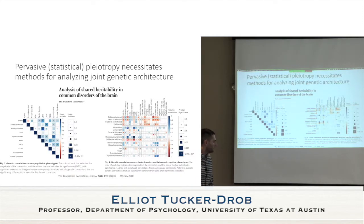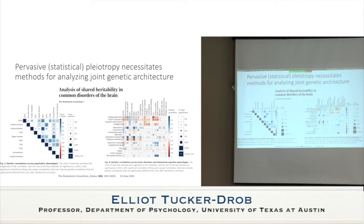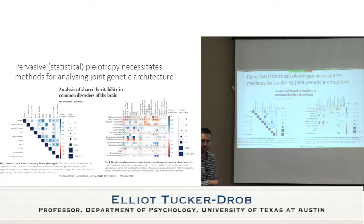We typically convert covariance matrices into genetic correlation matrices, which you've all done for your problem set. When we do that for lots of traits, we end up with what are sometimes called atlases — heat maps of genetic correlations. Here's a paper from the Brainstorm Consortium that analyzed common disorders of the brain: psychiatric and neurological diseases, plus social GWAS phenotypes like educational attainment and personality. You can see a pretty extensive pattern of genetic correlation across a broad range of phenotypes — it's not just a few hot spots surrounded by zeros.